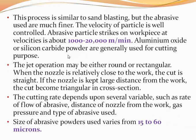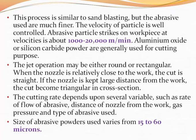This process is similar to sand blasting, except that in abrasive jet machining the abrasives used are much finer and the velocity of particles is well controlled. Abrasive particles strike the workpiece at a velocity of about 1000 to 20,000 meters per minute. The jet operation may be either round or rectangular. When the nozzle is relatively close to the work, the cut is straight. If the nozzle is kept at a large distance from the work, the cut becomes triangular in cross section.